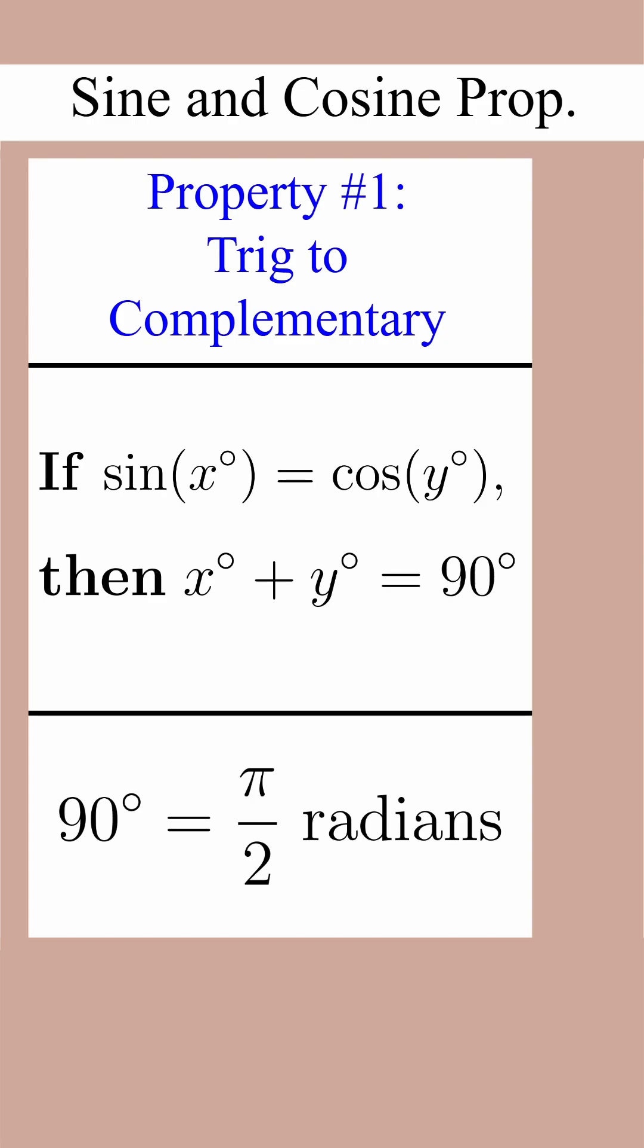Property number 1 tells us that if sine is equal to cosine, the arguments add to 90 degrees.